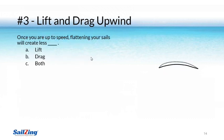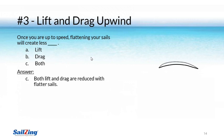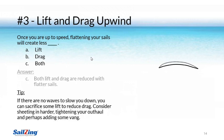Here's our third situation, which addresses flattening your sails. The answer is C — both lift and drag are reduced with flatter sails. This is important because you can actually gain a little speed in flat water by trimming harder. That's what airplanes do: after taking off, they trim up for cruising speed by raising the flaps to flatten their wings.